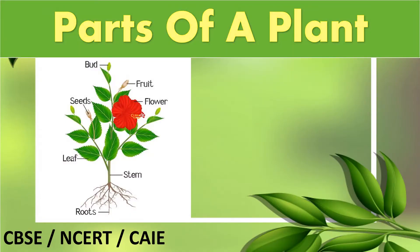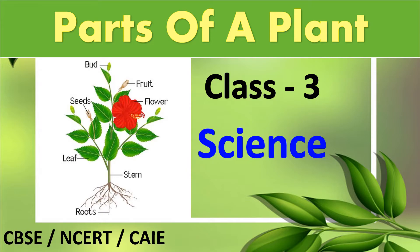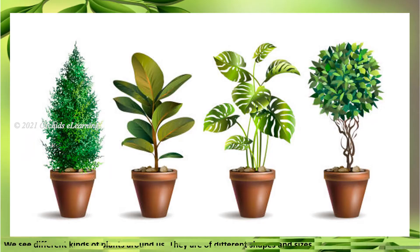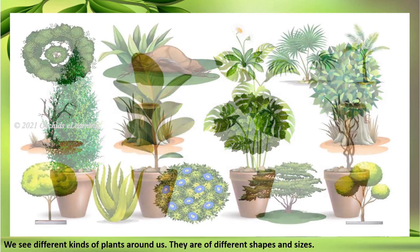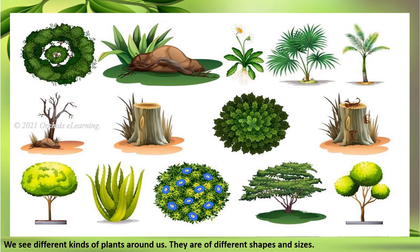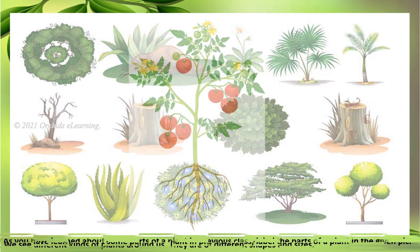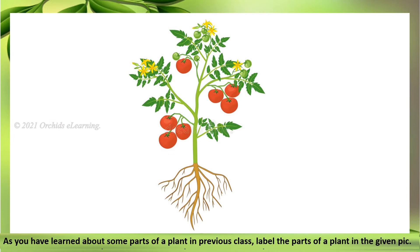Parts of a plant – Class 3 Science. We see different kinds of plants around us; they are of different shapes and sizes. As you have learned about some parts of a plant in a previous class, label the parts of a plant in the given picture.